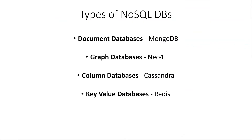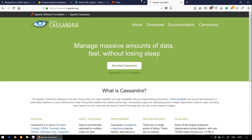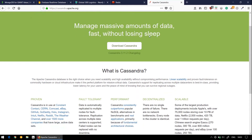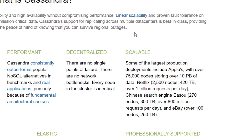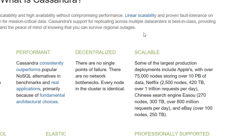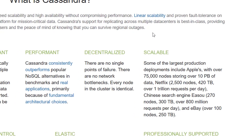The third type is column databases, or wide column stores. Wide column stores such as Cassandra are optimized for queries over large data sets and store columns of data together instead of rows. There are no rows or key-value pairs here — everything is a column, and these columns can be infinitely scaled. This is the official website of Apache Cassandra. Some of the largest production deployments include Apple with over 75,000 nodes storing over 10 petabytes of data, and Netflix with over 1 trillion requests per day.